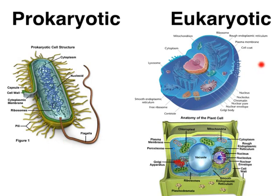Eukaryotic cells — 'eu' means true. These are your true cells. In other words, these are the cells you find in humans, plants, and animals. And since we are kind of egocentric and think everything should revolve around us, we say the types of cells we have are the true cells. These are far more complicated, as you can see — there are lots of different organelles inside the eukaryotic cell that we don't have in the prokaryotic cell.